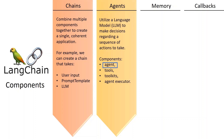The second component of agents is the set of tools. These tools represent functions that an agent can invoke. LLMChain provides a predefined set of tools to get started, but you also have the flexibility to define your own. Next, we have Toolkit, a concept introduced by LLMChain, which essentially comprises a group of tools designed to achieve a specific objective. Typically, a toolkit encompasses around three to five tools. LLMChain offers a wide array of toolkits including SQL Database, Pandas DataFrame, VectorStore, and more.